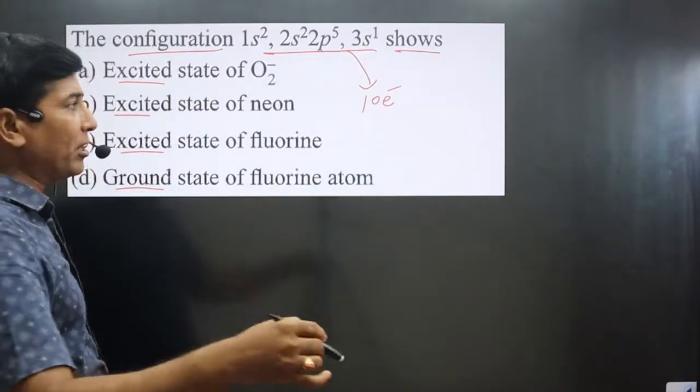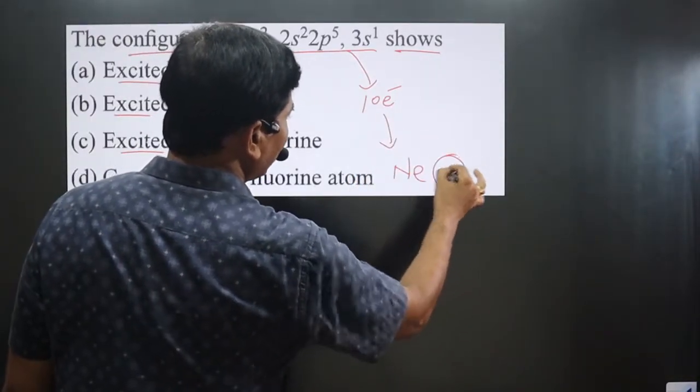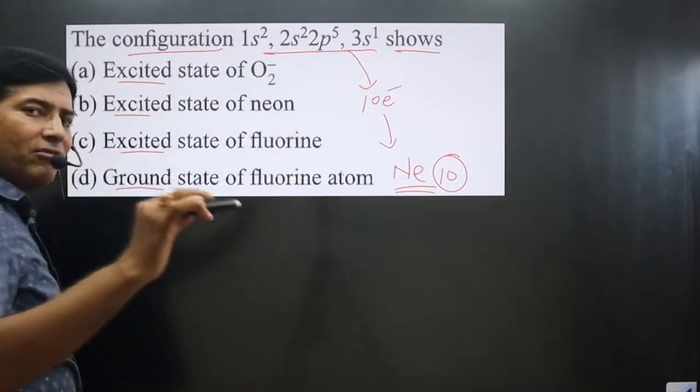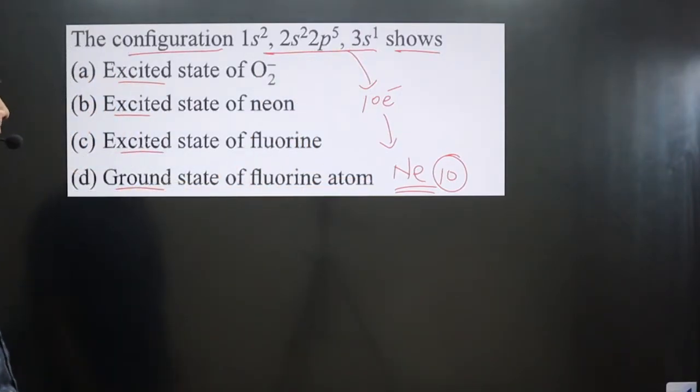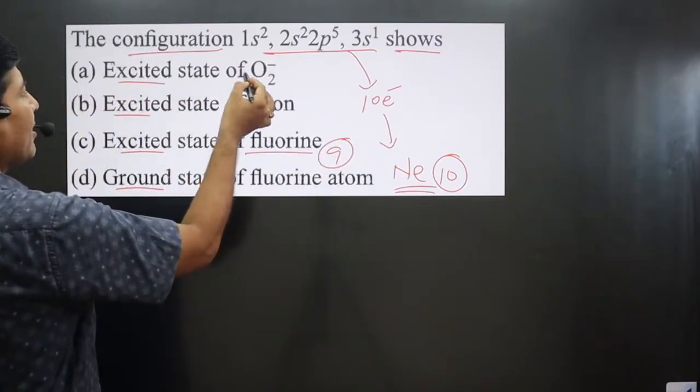Which element has atomic number 10? That is neon. This electronic configuration is given for neon, because fluorine has only 9 electrons.